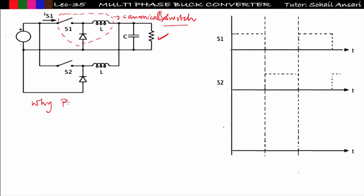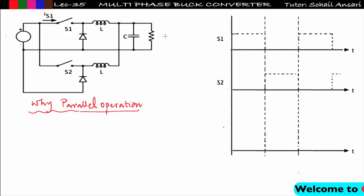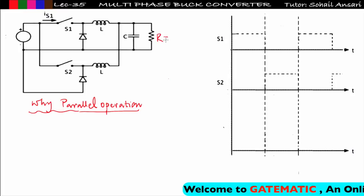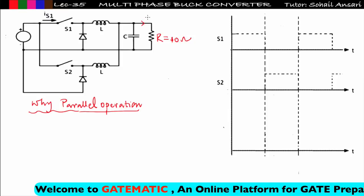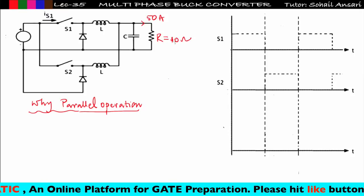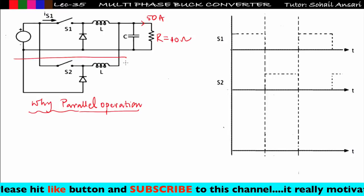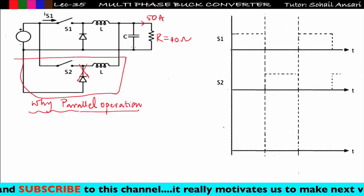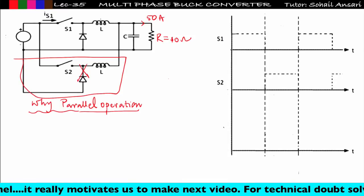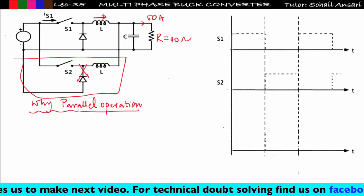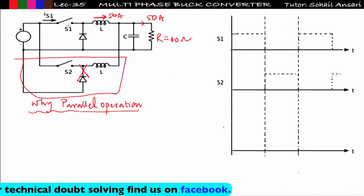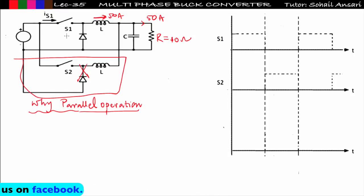Parallel operation is done in order to share the load. Like with transformers — why is parallel operation of transformers done? It is done to share a common load. Suppose I am connecting a load of 10 ohms, and the current flowing is 50 amperes. If I am taking only one buck converter with this canonical switch, then 50 amperes of current will flow across the inductor — so inductor current will be 50 amperes.